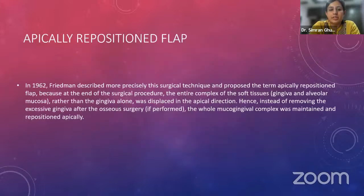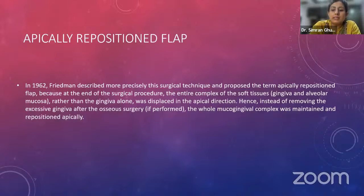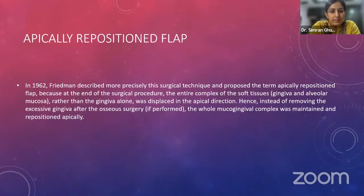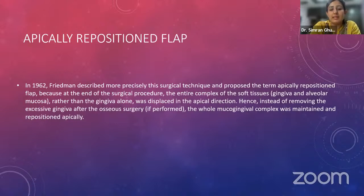The next pocket elimination procedure is the apically repositioned flap. In the mid-1950s, the focus of periodontal surgery shifted towards preserving an adequate zone of attached gingiva after surgery. One of the first authors to describe this technique was Nabers in the 1950s, later modified by Tyrrell in 1957. In 1962, Friedman described it more precisely and proposed the term 'apically repositioned flap' because at the end of the surgical procedure, the entire mucoperiosteal complex — gingiva, alveolar mucosa — was displaced and repositioned in an apical direction, rather than removing excessive gingiva.